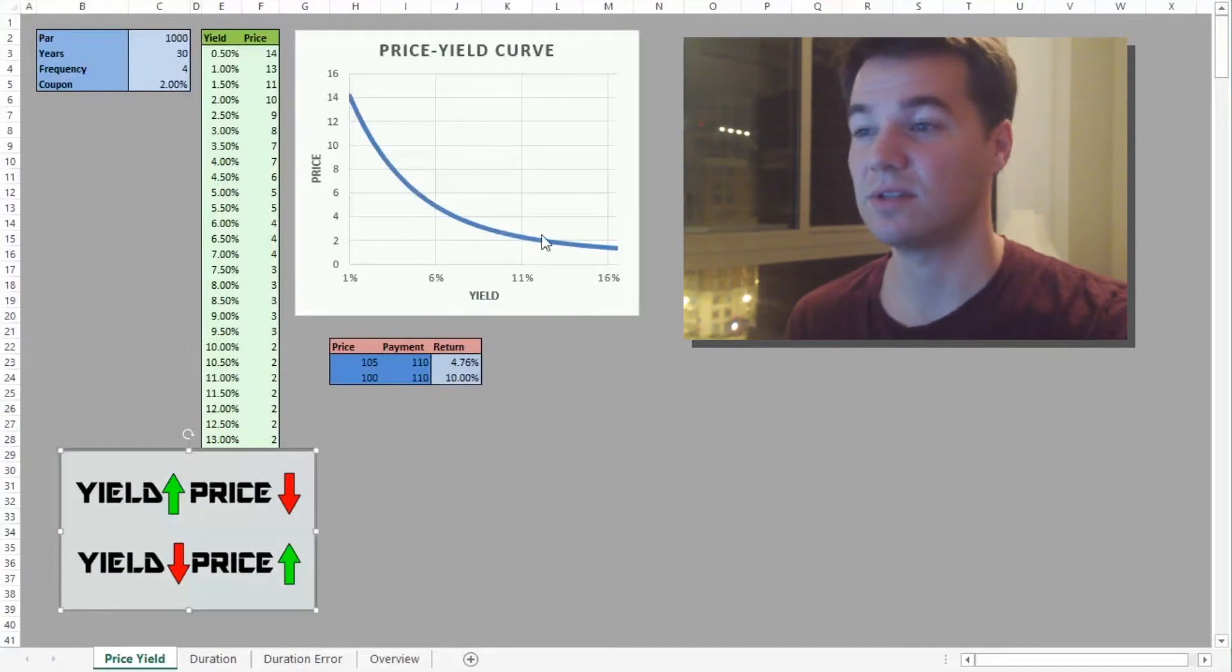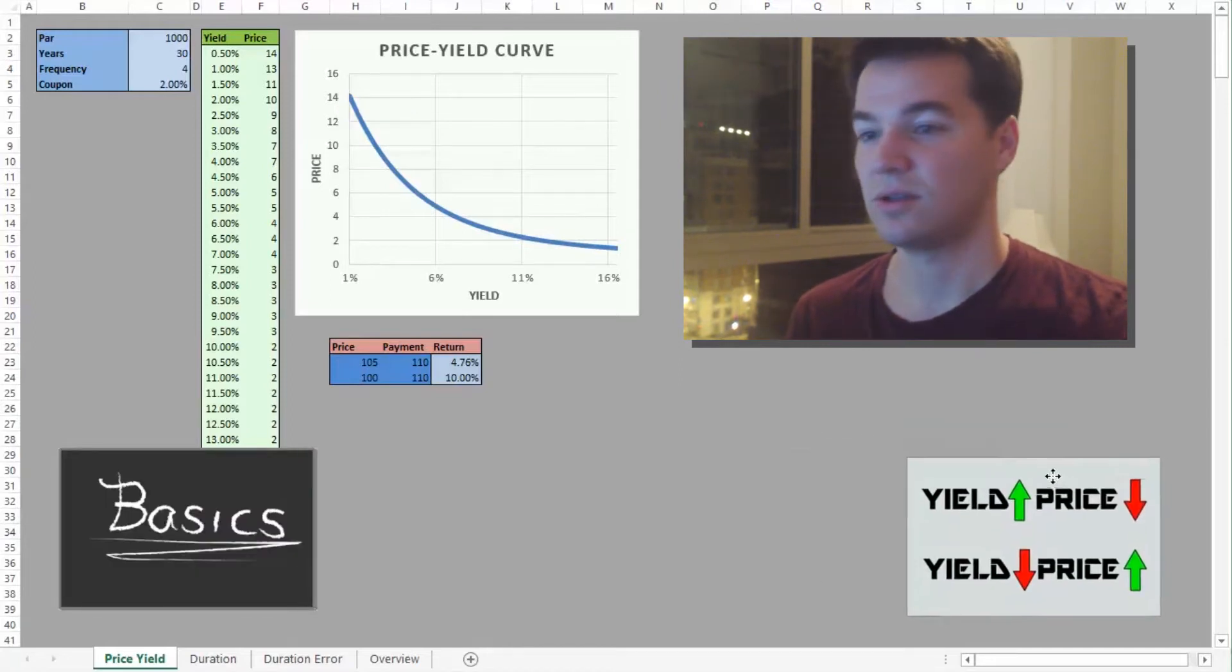Here we have our price-yield curve. As yields increase, prices decrease. As yields decrease, prices increase. Inverse relationship. So an illustration of that here, let's say we invest 105, get 110 back, our return is about 5%. If we invest less, 100, get 110 back, our return is 10%. Simple illustration of that inverse relationship.